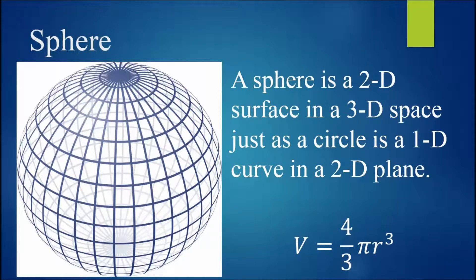Mathematically speaking, a sphere is a two-dimensional surface in a three-dimensional space, like the surface of a ball. Similarly, a circle is a one-dimensional curve in a two-dimensional plane. When we describe a solid object as spherical, we mean that the object forms a surface in 3D space that is a sphere. Recall from geometry that the volume contained in a sphere is given by four-thirds pi radius cubed.